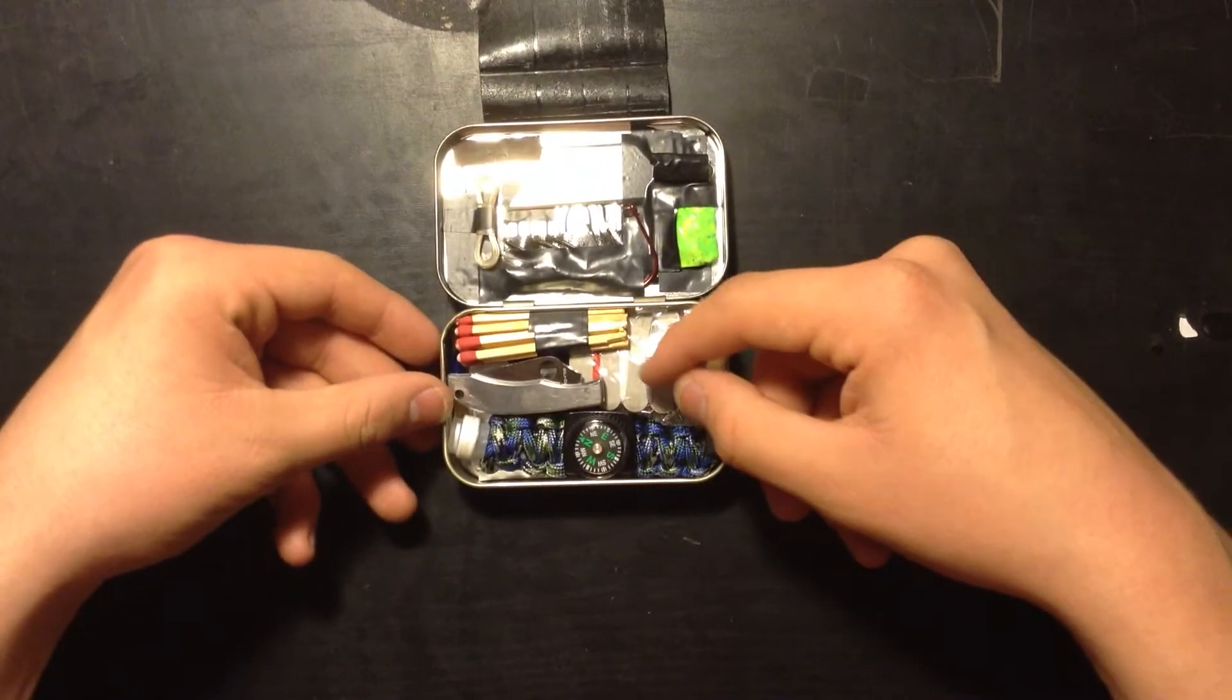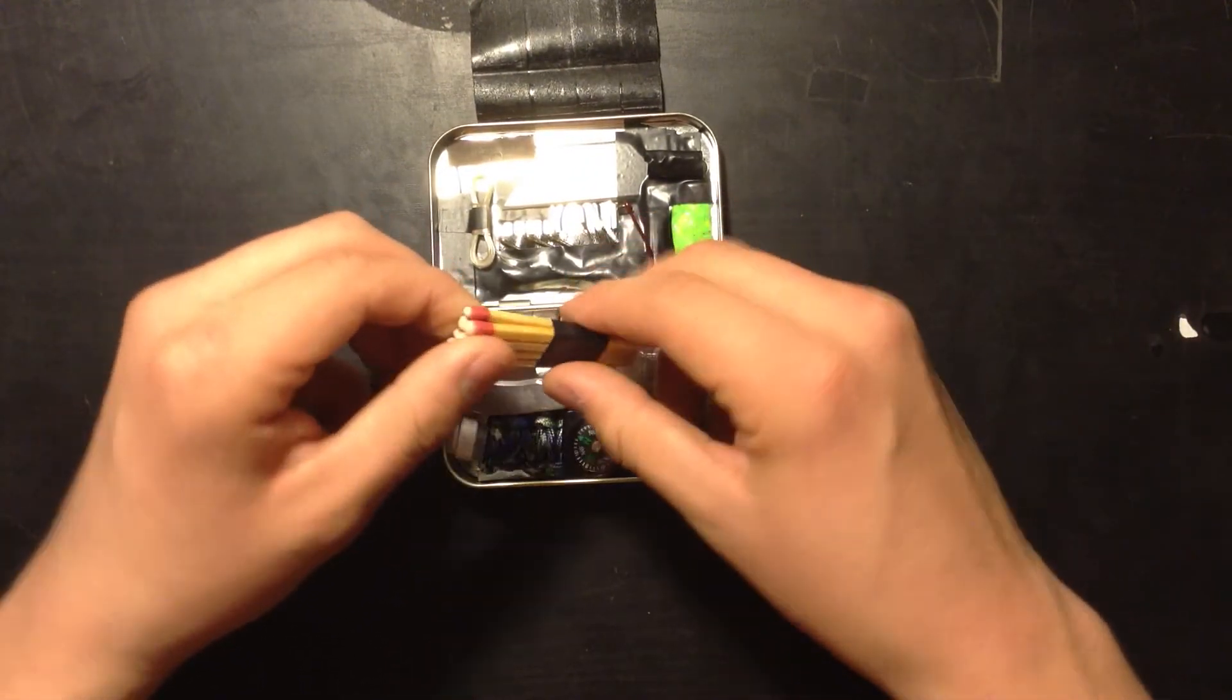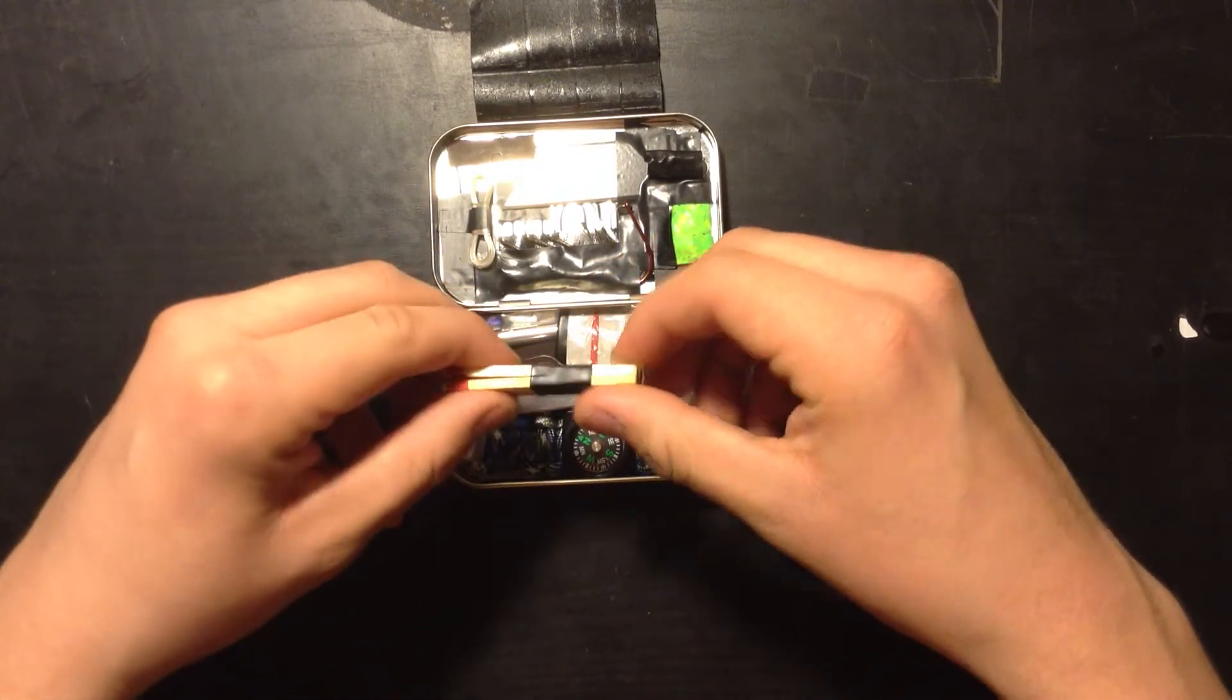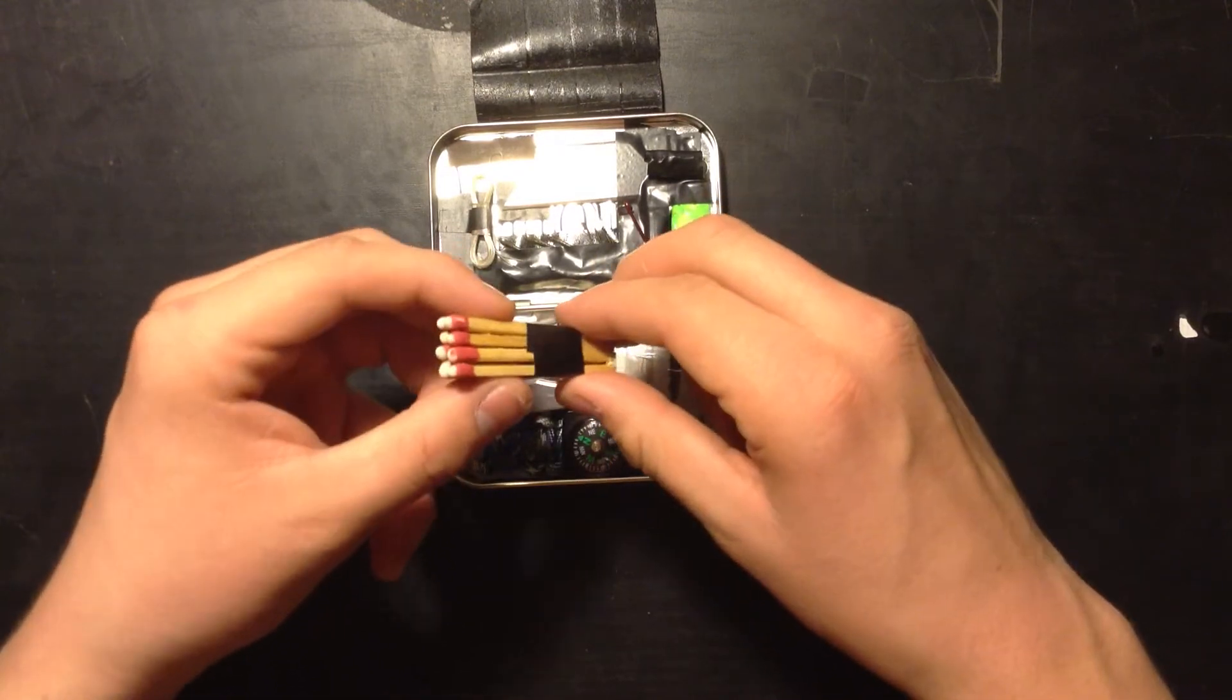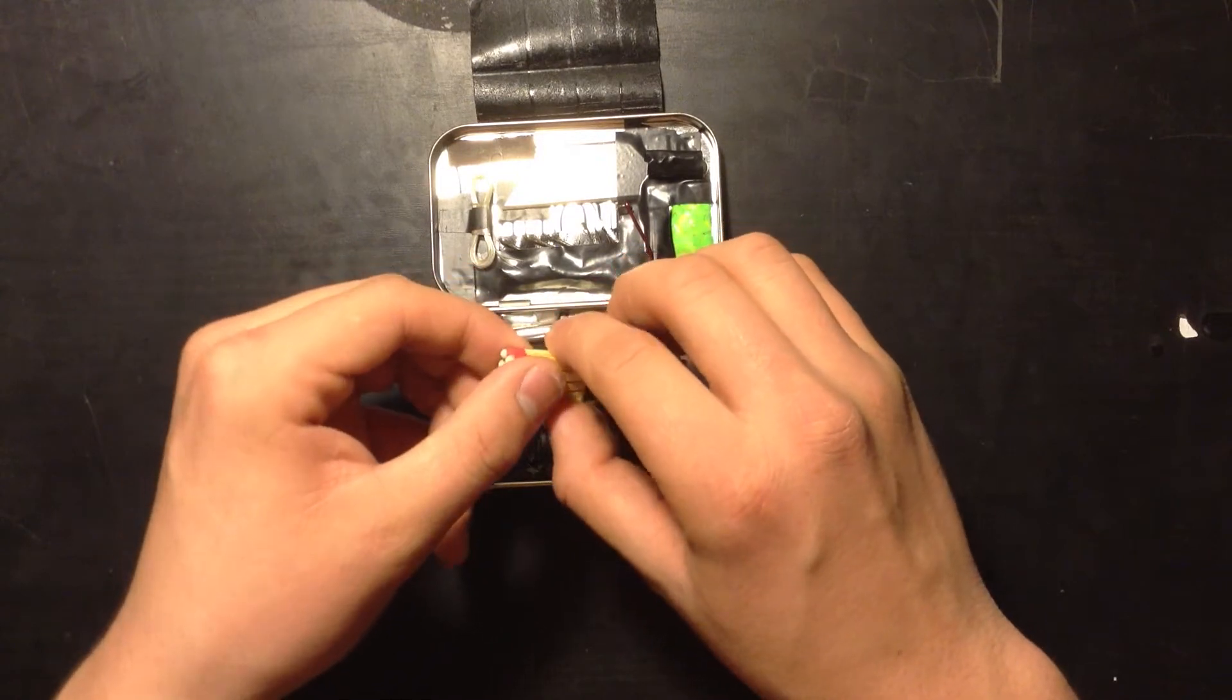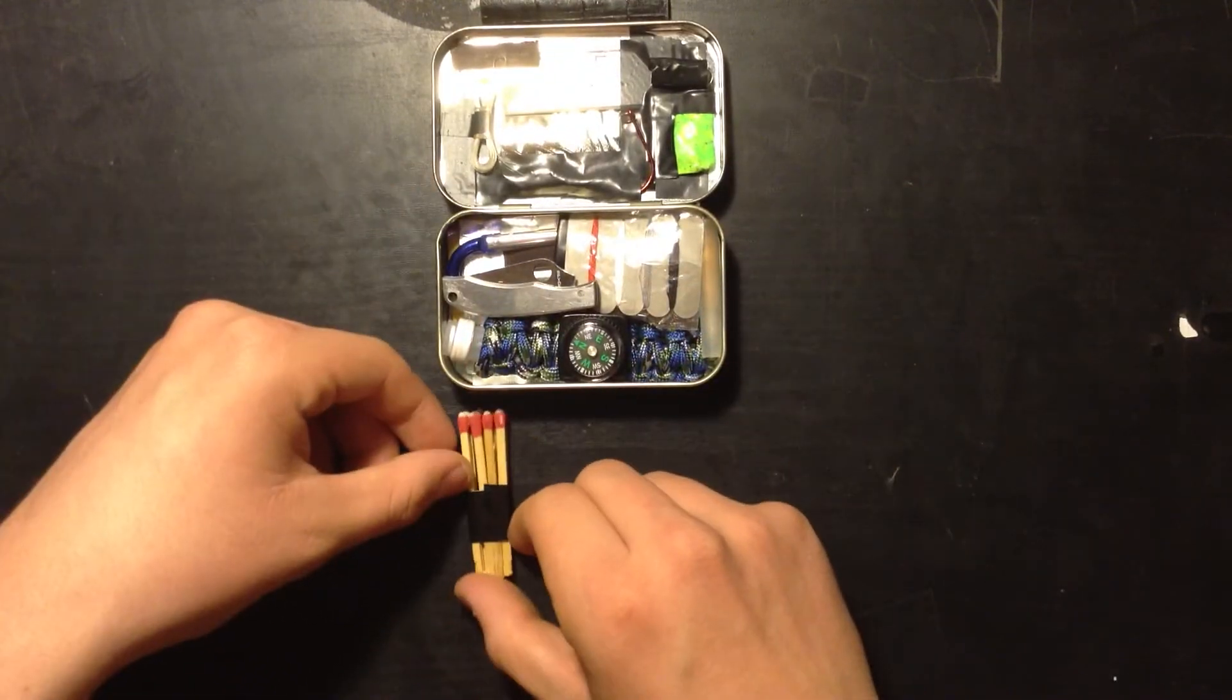I'm going to get to the more important part down here. I got eight Strike Anywhere matches. Got these actually at a yard sale. There was this ammo box just full. It was actually a big survival kit, and I got it for I think ten bucks. It was really cool. It was really old, too. It came in one of those old 50 cal ammo boxes. Pretty cool.